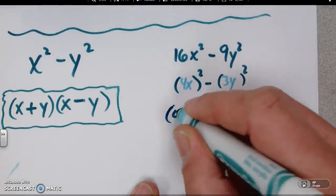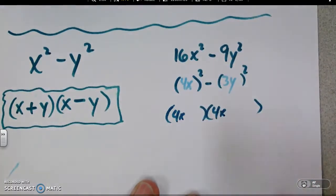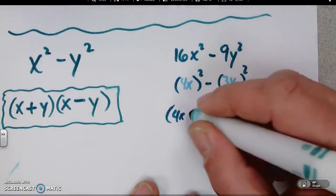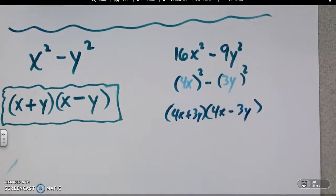So then this thing, 4x and 4x, that makes sense. That gives 4x squared or 16. 3y and 3y. One's got to be a plus. One's got to be a minus. And there it is.